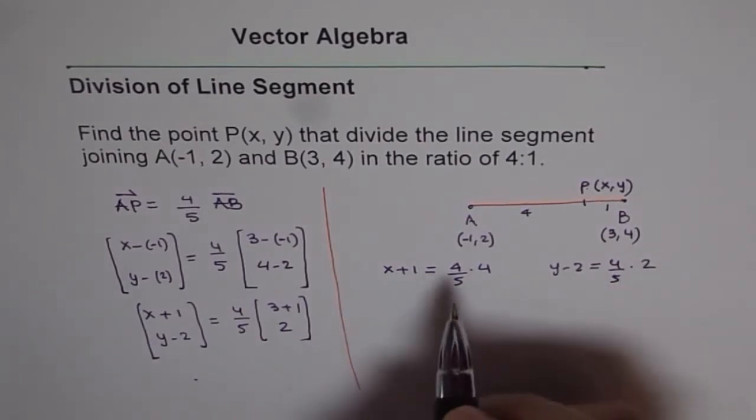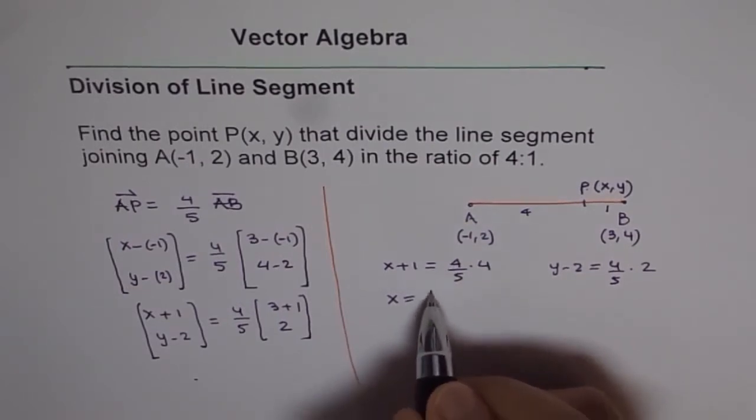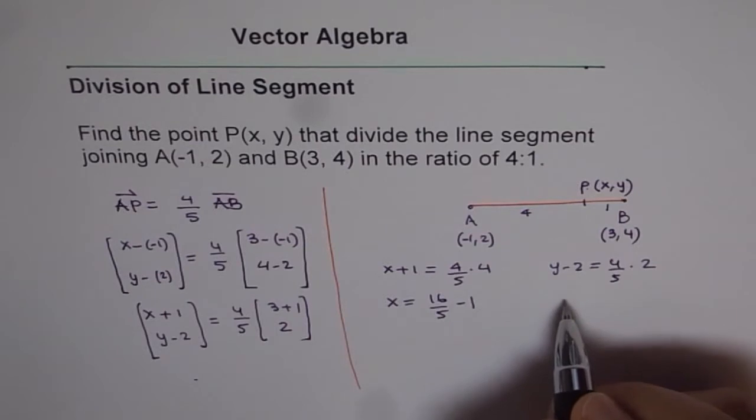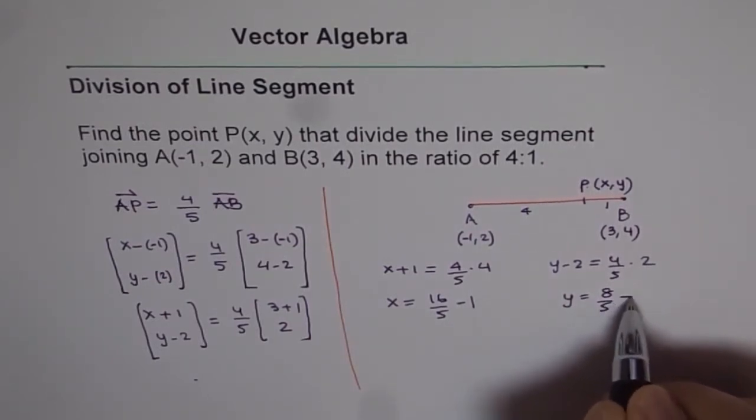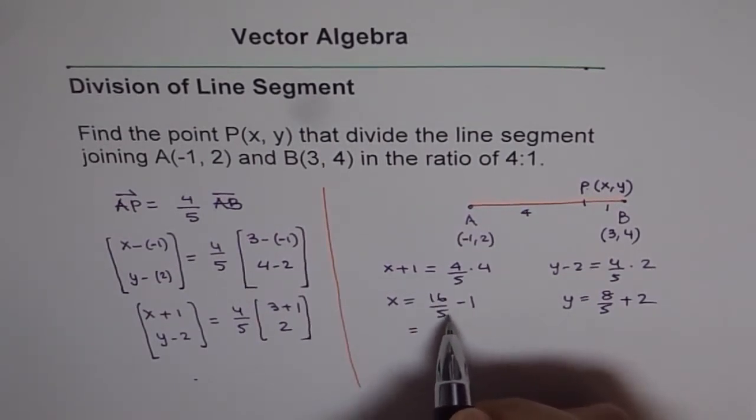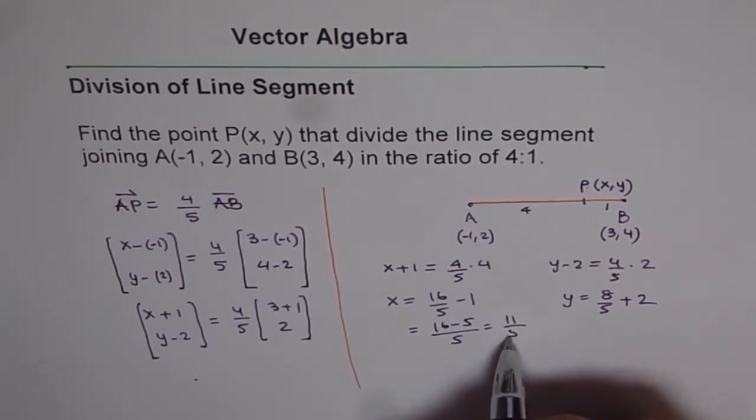So that gives us X equals 16 over 5 minus 1 and here Y equals 8 over 5 plus 2. And 16 over 5 minus 1 is 16 minus 5 over 5, that gives us 11 over 5.